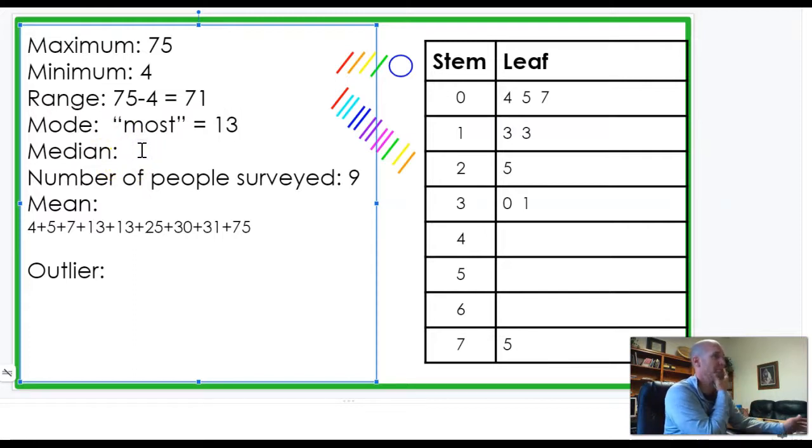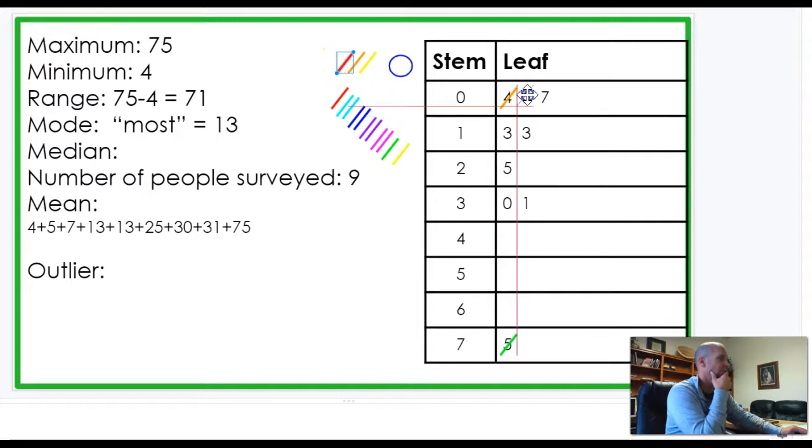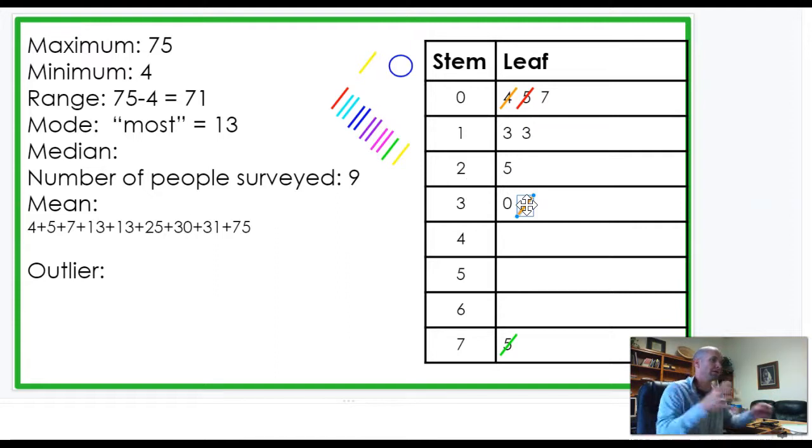Now, the median is the middle number. And that's what these little slashes are for. The way I think about it is, you're going to cross off numbers on each end. So, if we cross off the four, we'll also cross off the seventy-five. Because that's the biggest number. Then we'll cross off the next sets of numbers. So, if we cross off the five, we'll also cross off the thirty-one. We're just going down to narrow this down to the middle.